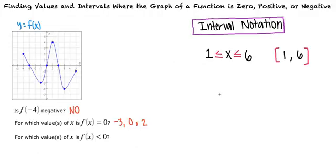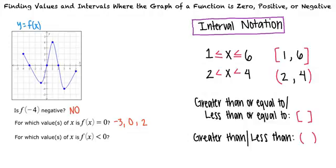If we wanted to indicate numbers less than 4 but greater than 2, we would write open parentheses 2 comma 4 close parentheses. The parentheses tell us that the numbers 2 and 4 are not included in the set because we have x is greater than but not equal to 2 and x is less than but not equal to 4.